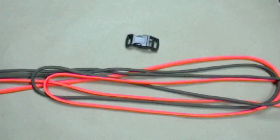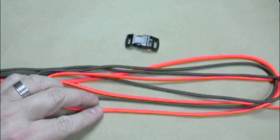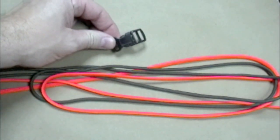In this particular bracelet we're going to use two colors, the orange and olive drab, and we're going to be using a half inch side release buckle.